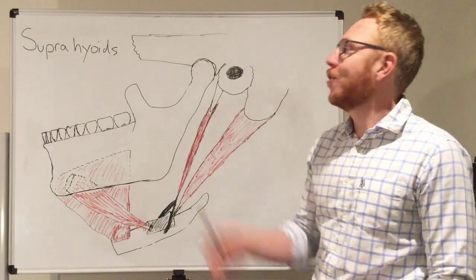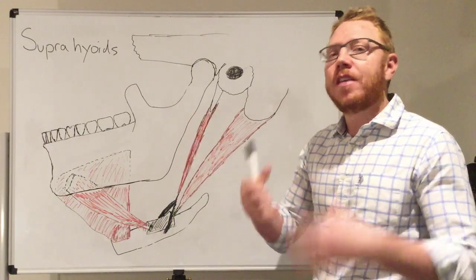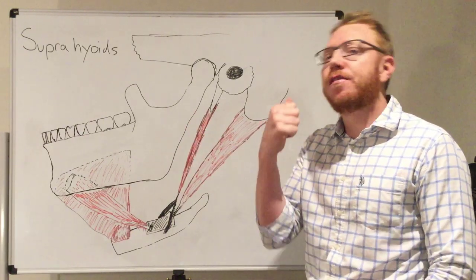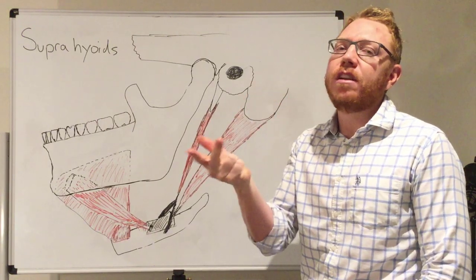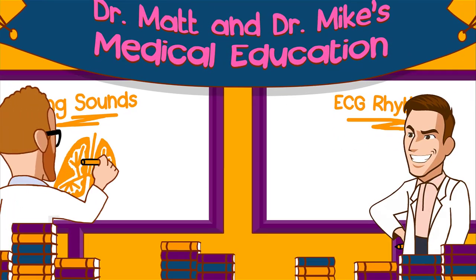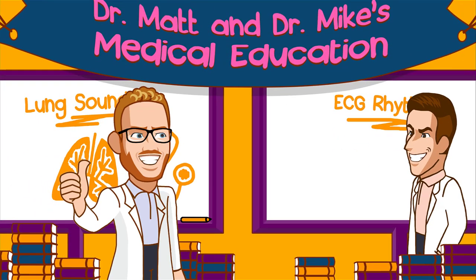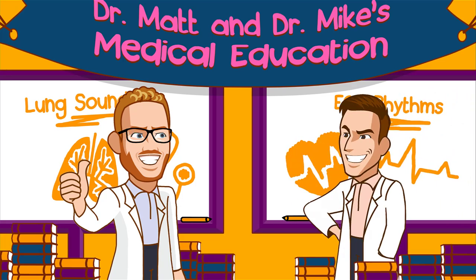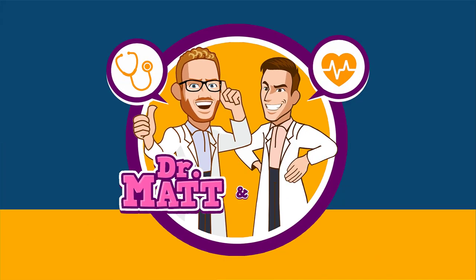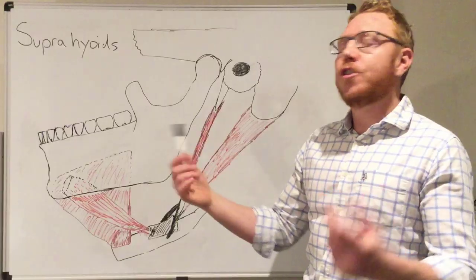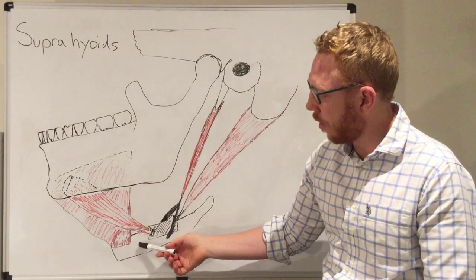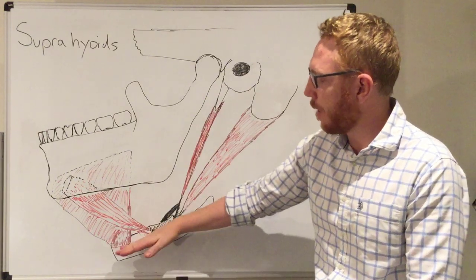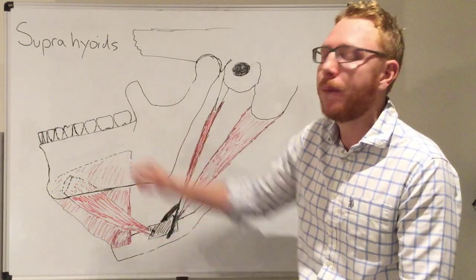Welcome to this short video on the suprahyoids. We're going to cover the four muscles of the suprahyoids, their attachments, their nerve innervations, and their actions. Supra means above, so these muscles are located above the hyoid bone, which is here.